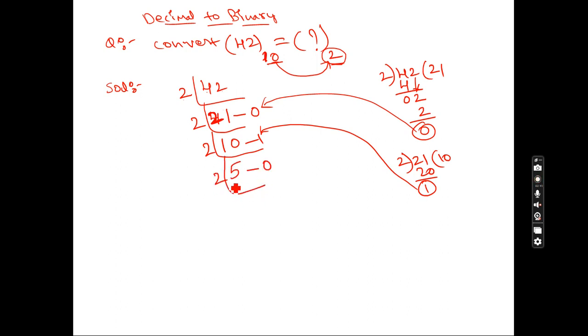Next, 2 into 2 is 1, remainder is 0. Next 2 into 1, we cannot divide, so remainder is 1. To get the whole thing, we need to write the numbers from bottom to top.